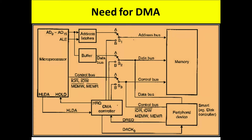We already discussed the polling method and interrupt-based method. Now we will discuss direct memory access. The word 'direct' means data can be transferred between a peripheral and memory without the intervention of the processor — a direct connection is established between the peripheral device and the memory.